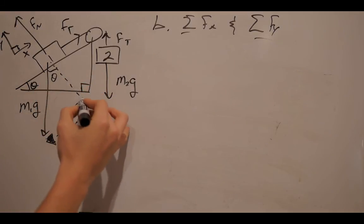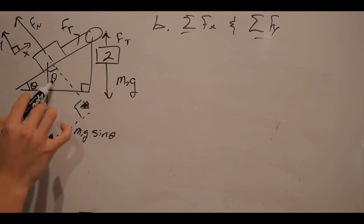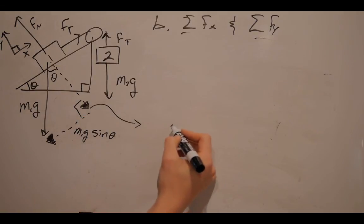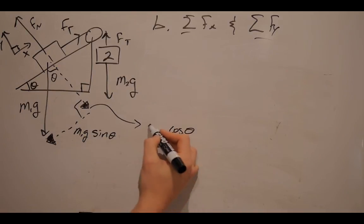This virtual side right here is adjacent to theta. And we know that for adjacent SOH CAH TOA, CA is cosine. And the equation is always hypotenuse times cosine of theta. So here we have all our virtual forces.